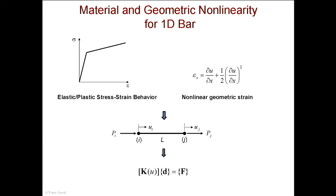Normally the stiffness matrix does not depend on deflection — you agree? Usually when you calculate it for all your problems, the stiffness matrix is a constant value. You inverted K and you got the deflections. But now if the stiffness depends on the deflections, I have to solve this in a different way.